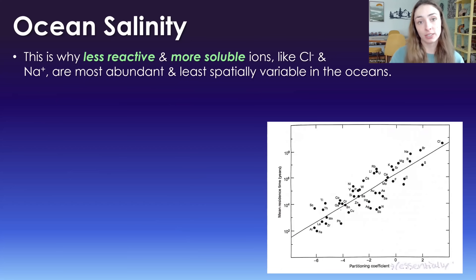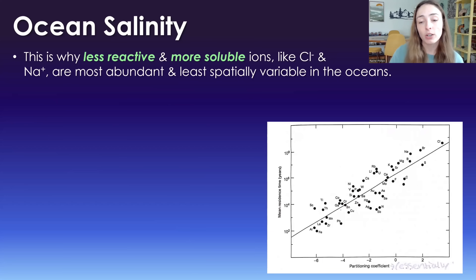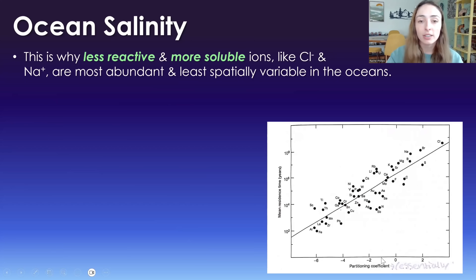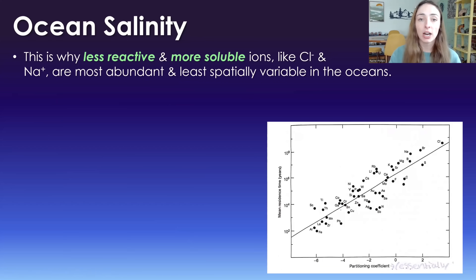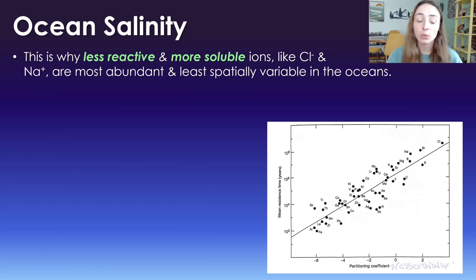The less reactive an ion is, the less likely it is to react and precipitate out as a mineral into the geosphere, and the more soluble it is, the more it remains dissolved in the water. The graph here shows essentially solubility on the x-axis, and with increasing solubility there is an increase in mean residence time — the amount of time an ion stays in the ocean before being removed.